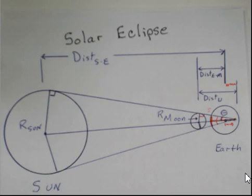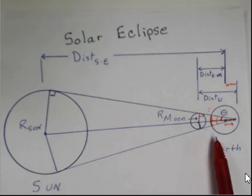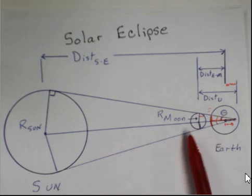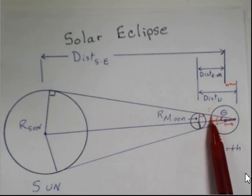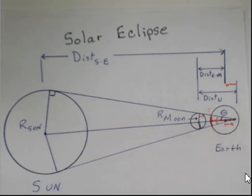If you look in this sketch, it's not to scale, definitely not to scale. The sun is 400 times bigger than the moon, roughly, and the sun is roughly 400 times further away from the Earth than the moon is from the Earth. So I've compressed things a lot here in order to make these triangles easy to see.